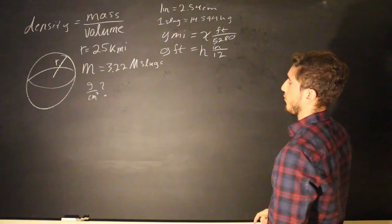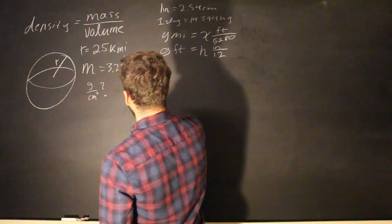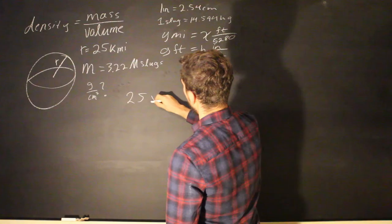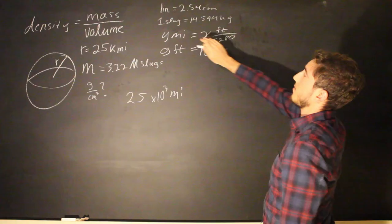So we need to convert from miles to feet, from feet to inches, and from inches to centimeters. So, pretty easy. We have 25, and remember kilo stands for 10 to the third times 10 to the third in miles. And if we want to go from miles to feet, we're just going to move over the 5,280 and multiply it to the miles, and then we're going to get x feet, which is what we want.